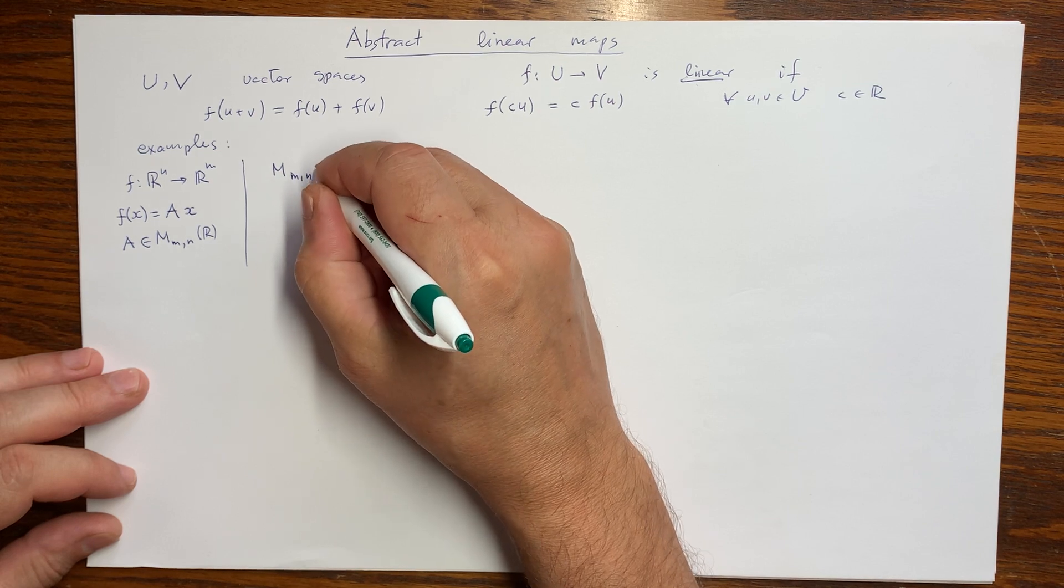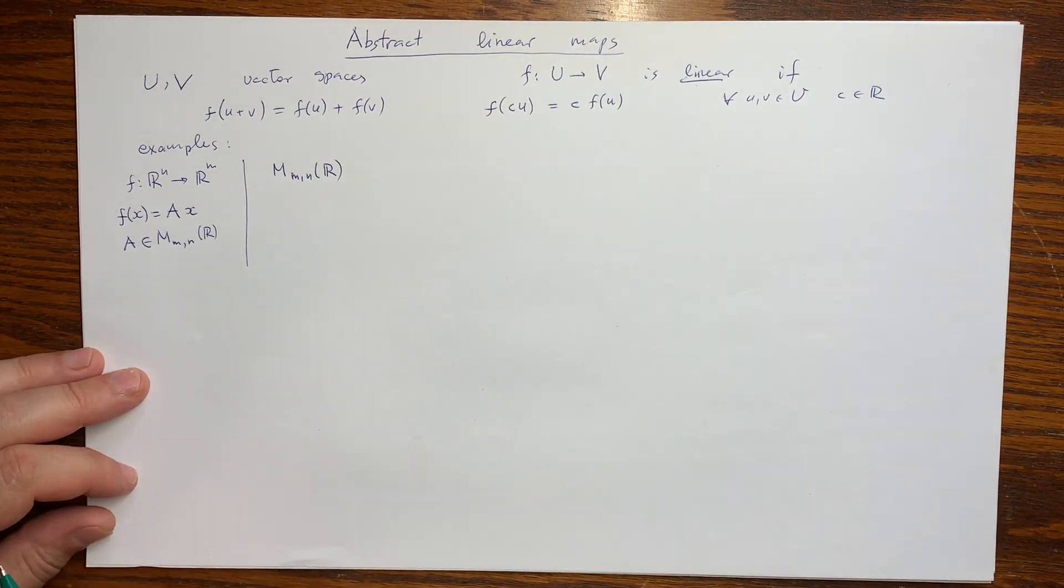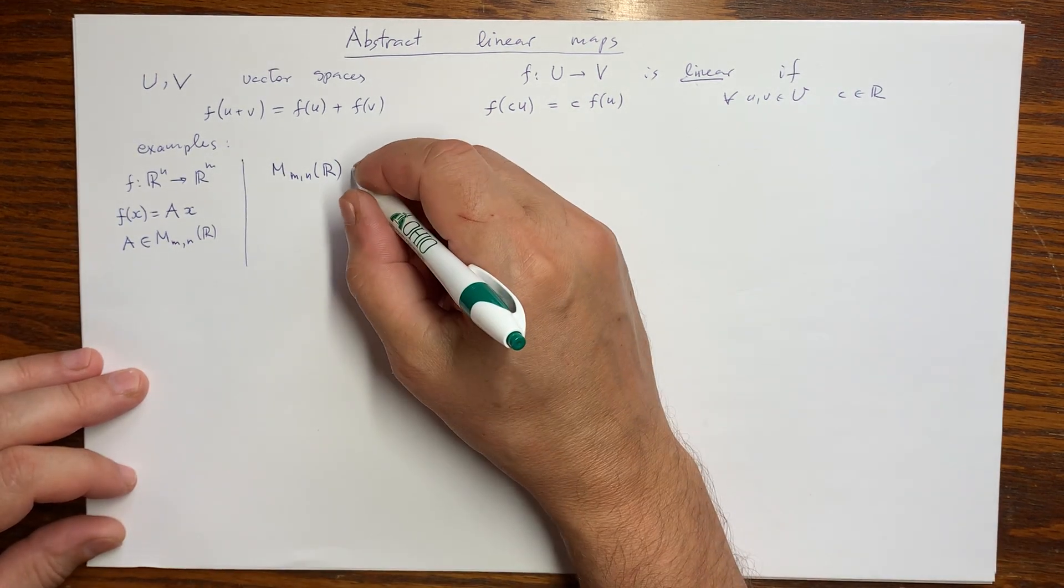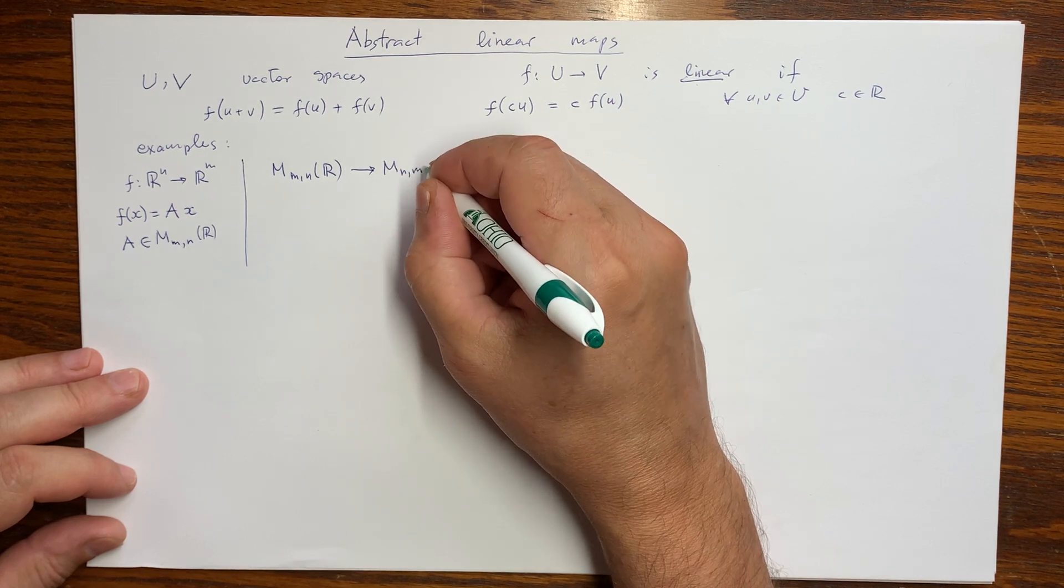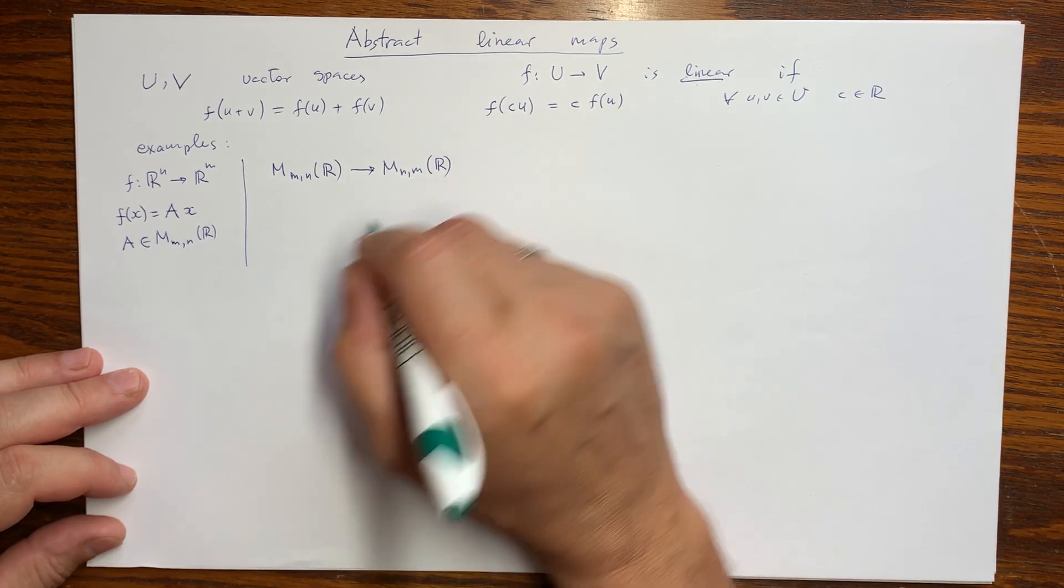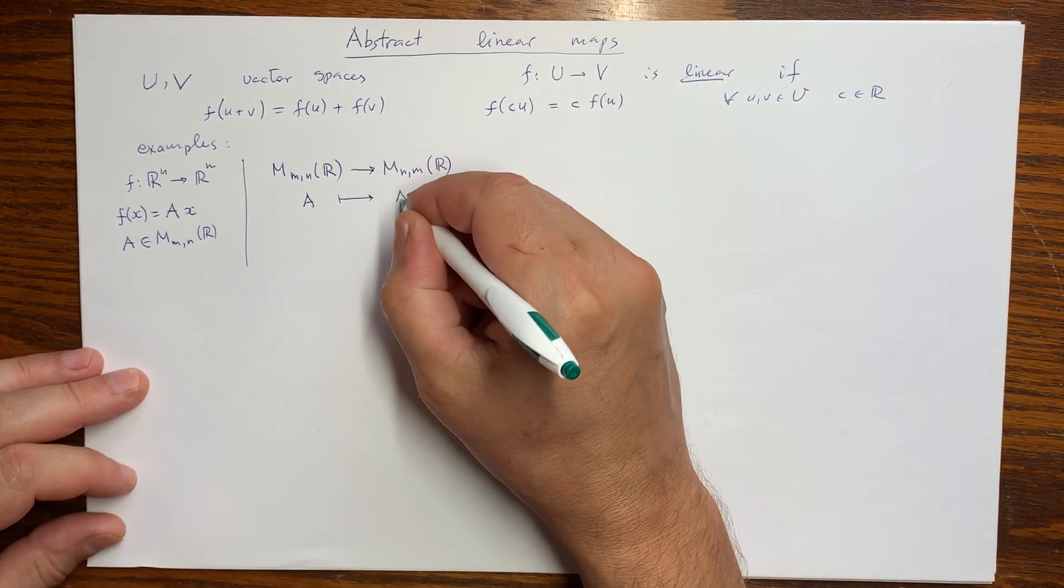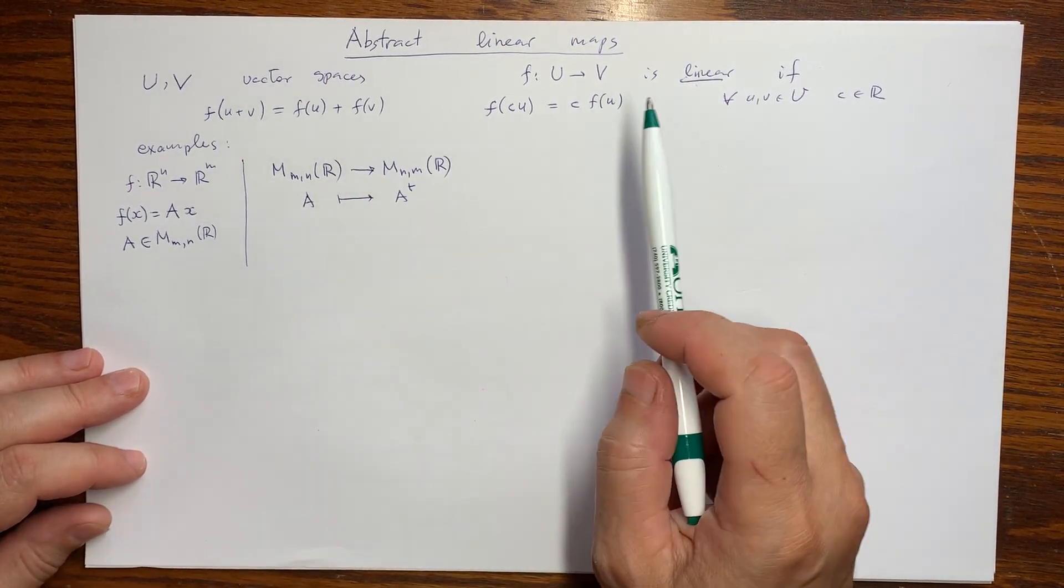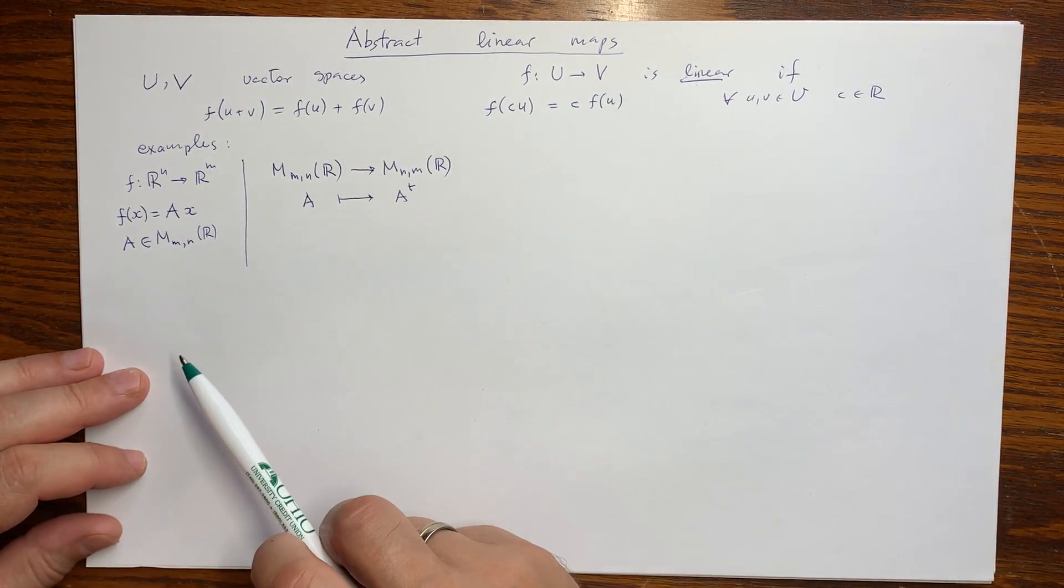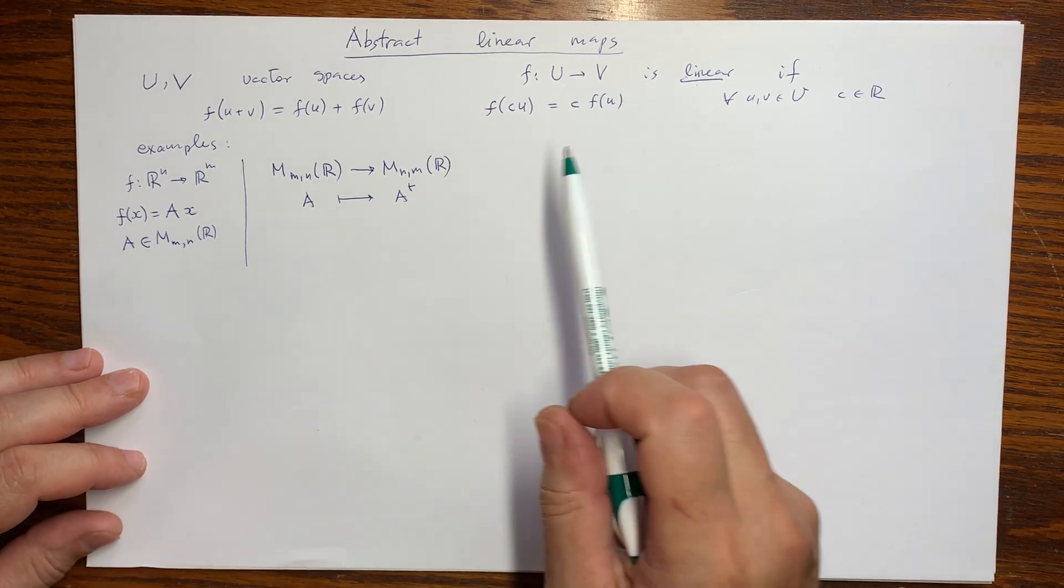Look at different examples of vector spaces. So vector spaces of matrices of arbitrary size m by n. There is a linear map into matrices where the dimensions are exchanged. And the map is taking the transpose. And the properties of the transpose are just these properties. Well, a pair of properties are just guaranteeing that the map is linear. So the transpose of the sum is the sum of transpose.